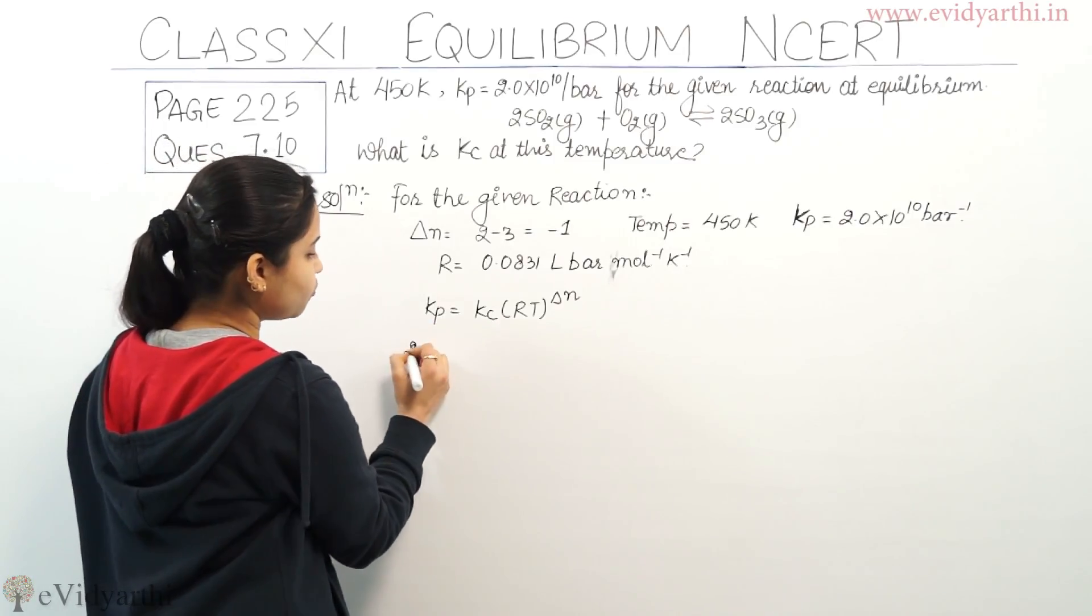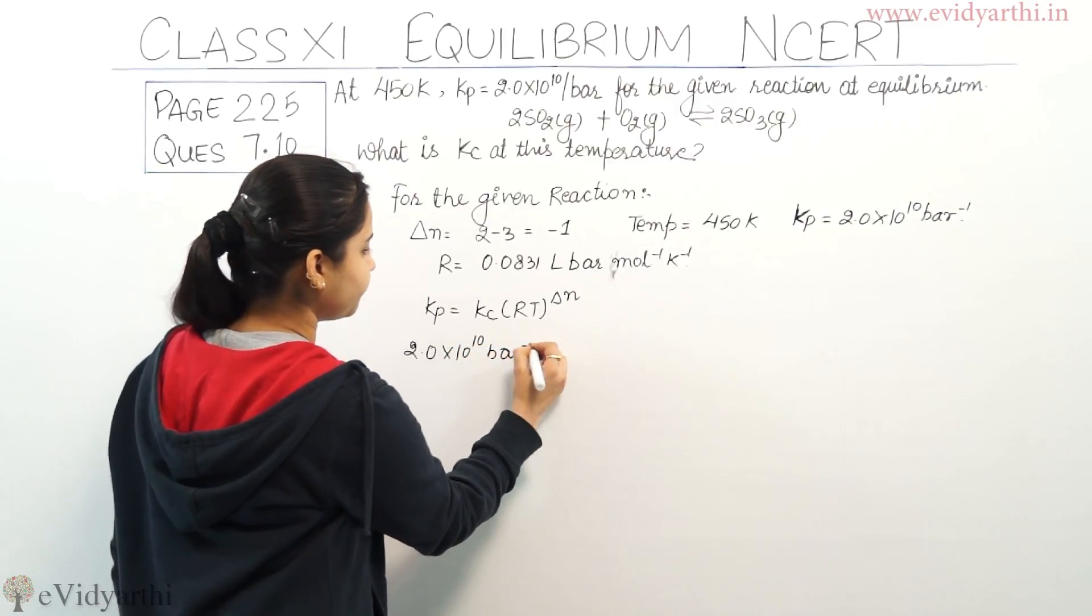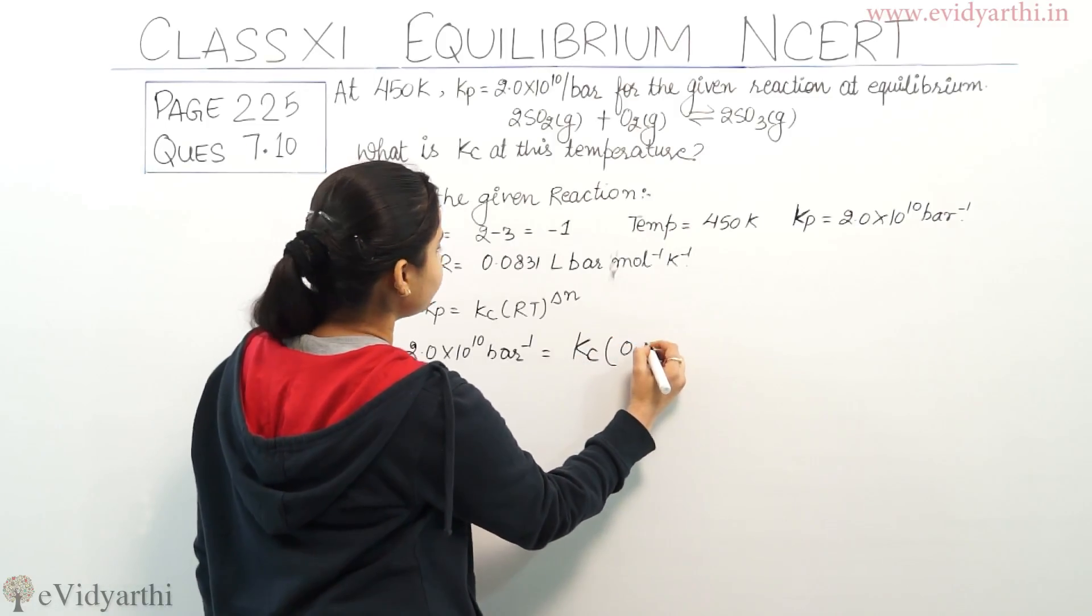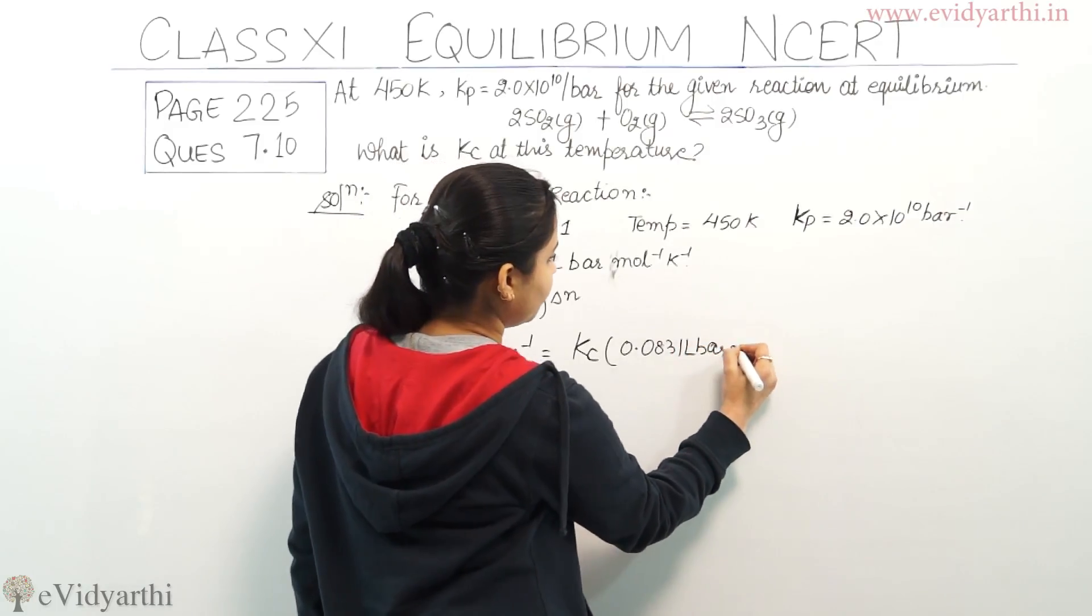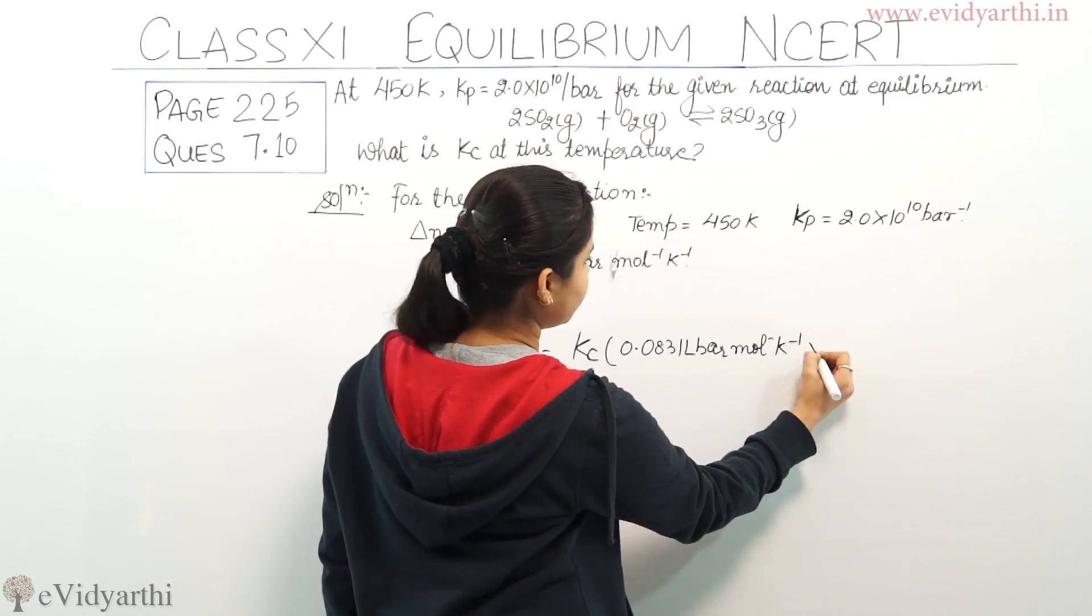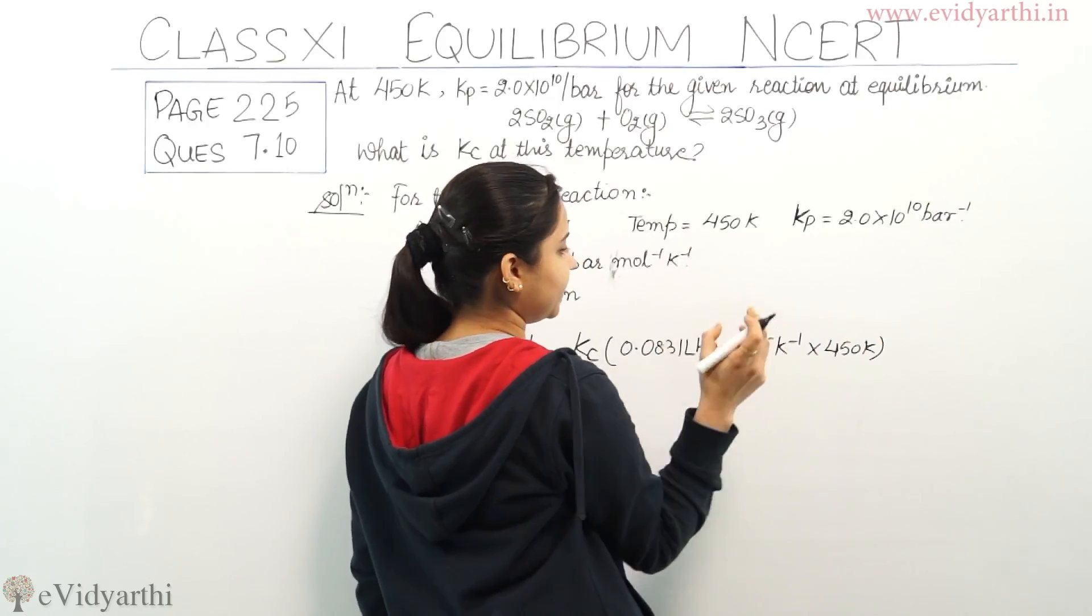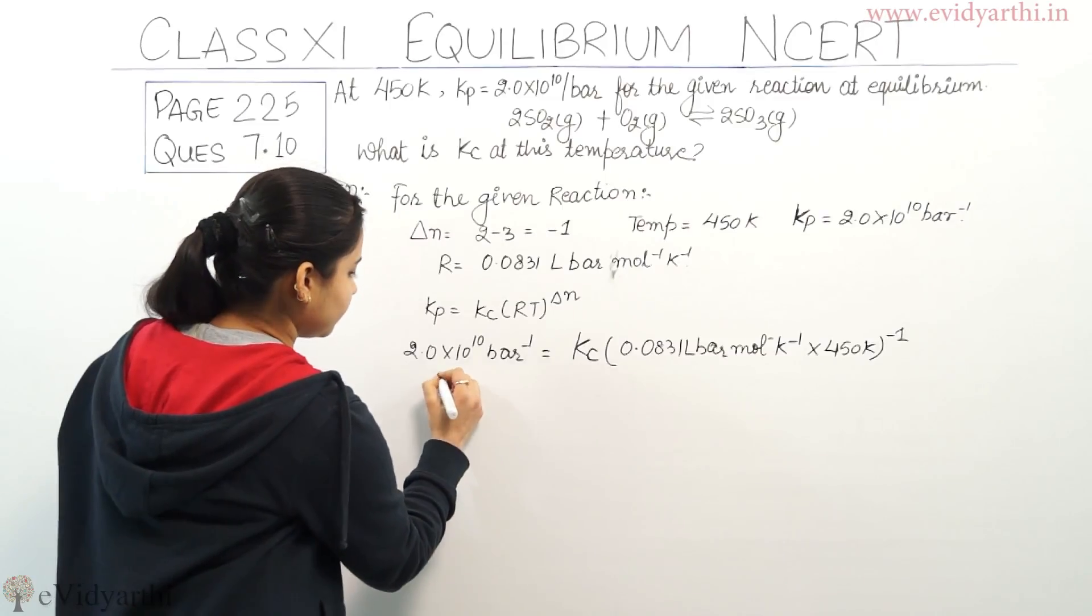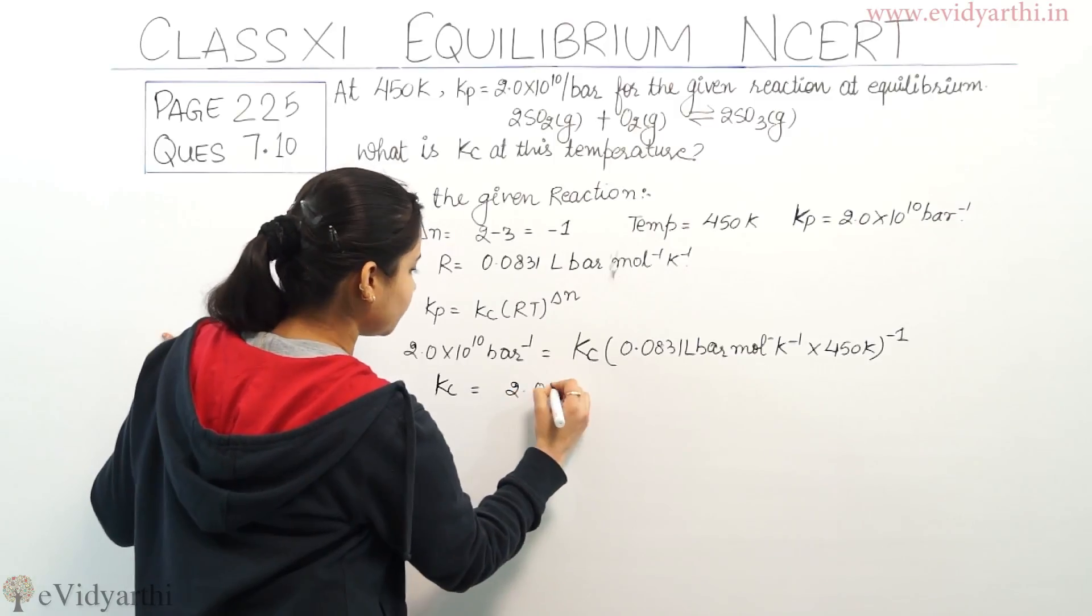So what is the value of Kp? It is 2.0 × 10^10 bar^-1. Kc is the value we need to find. We can rearrange this equation to solve for Kc.